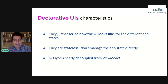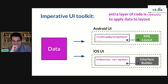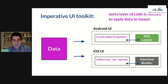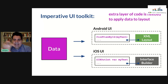In imperative UI toolkits, you always have an extra layer of code needed to couple data to the UI component. In Android this is find-view-by-ID. Even with view binding, which simplifies things and eliminates boilerplate, you still need this extra layer to couple data to the layout. Similarly, in UIKit in iOS, you need to couple code to the UI components.